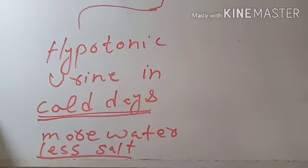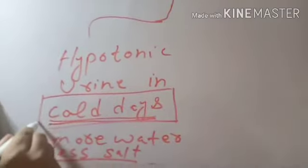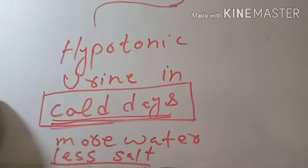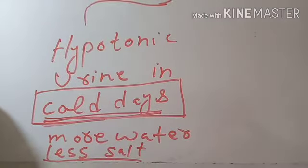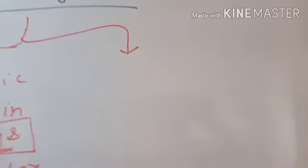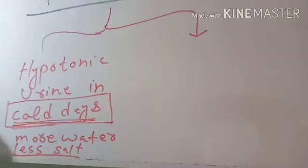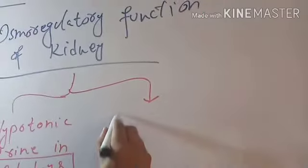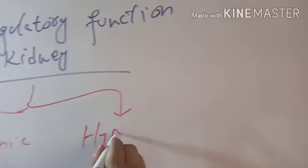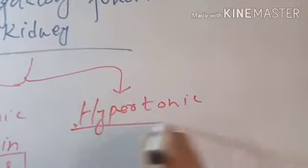And this type of urine, the dilute urine or hypotonic urine, is produced in cold days. The other type of urine which is formed by kidney to maintain the homeostasis and osmoregulation is hypertonic urine.